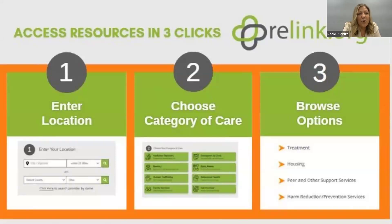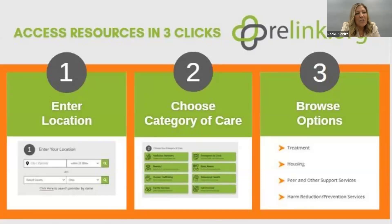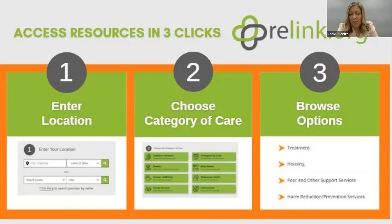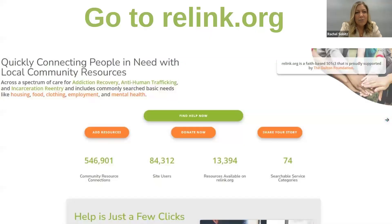In our Deflection 101 webinar today, they'll be talking about quick response teams. After my boss Barbara and I attended a Deflection Conference just a few weeks ago, we came back and put all the quick response teams into ReLynx.org. You can access those by going to Addiction Recovery, then clicking on Peer and Other Support Services, and then selecting Addiction Recovery Community Groups and Coalition.